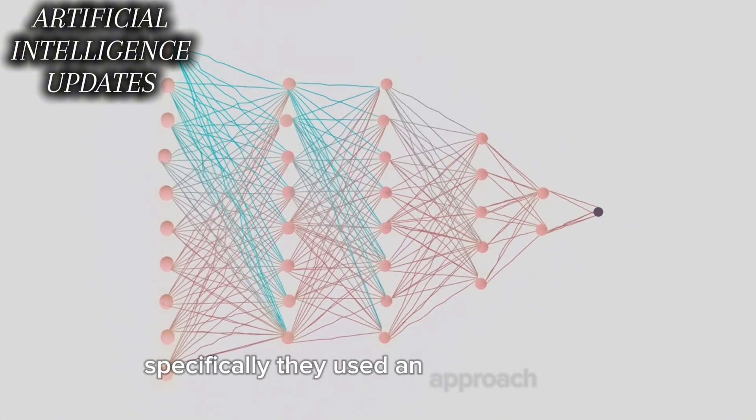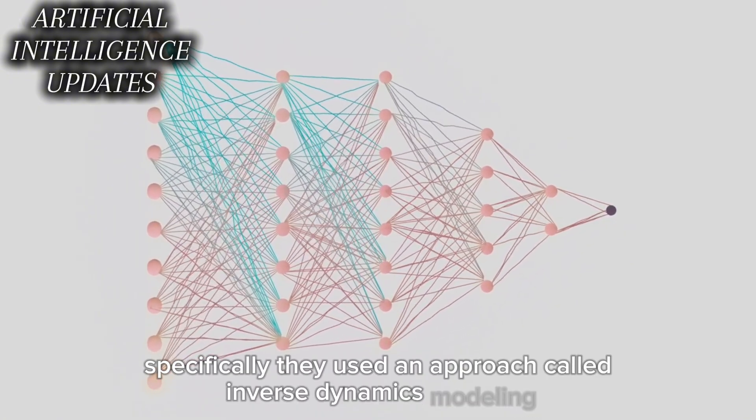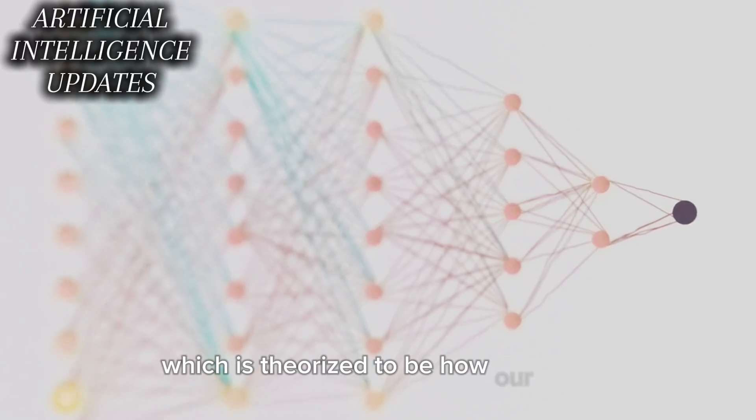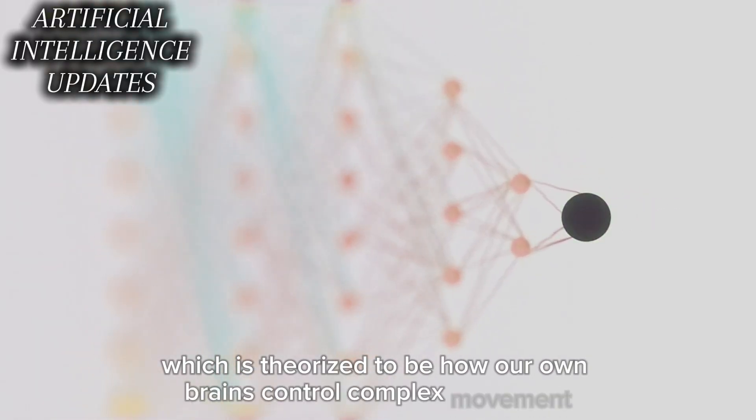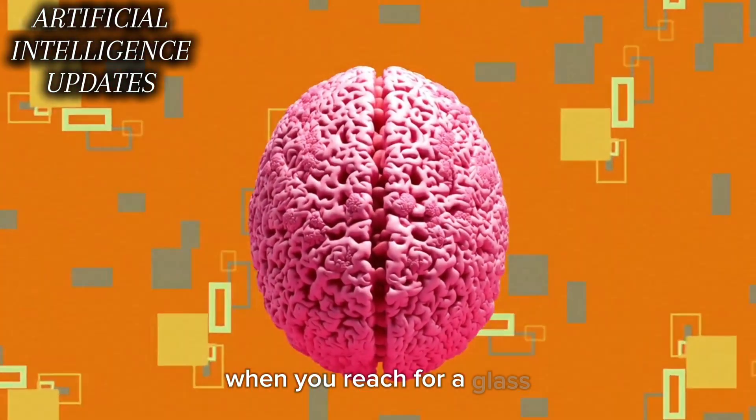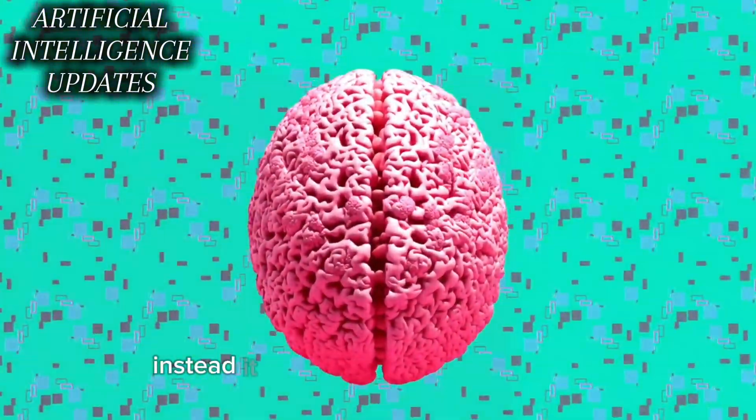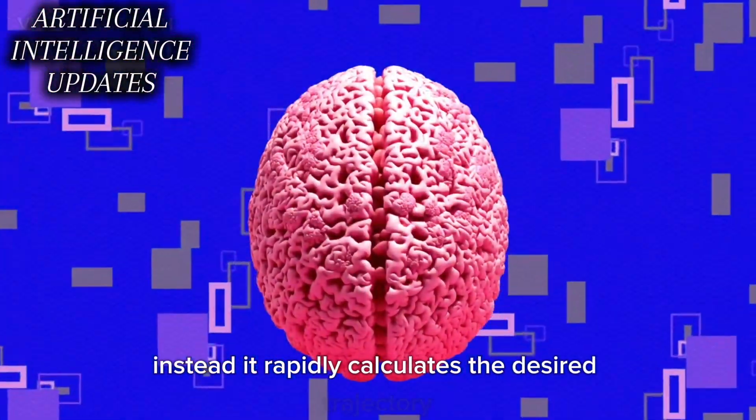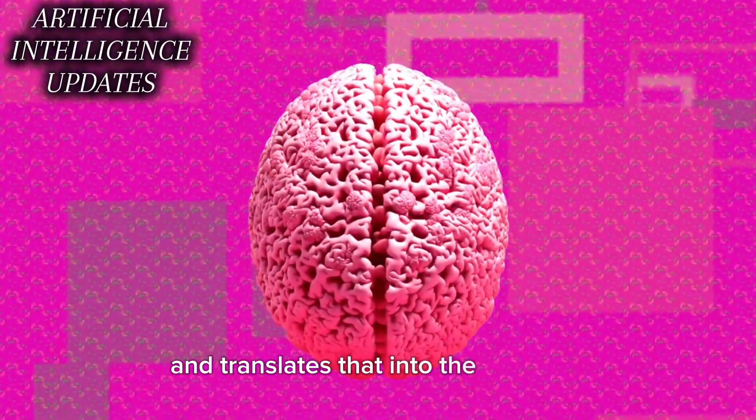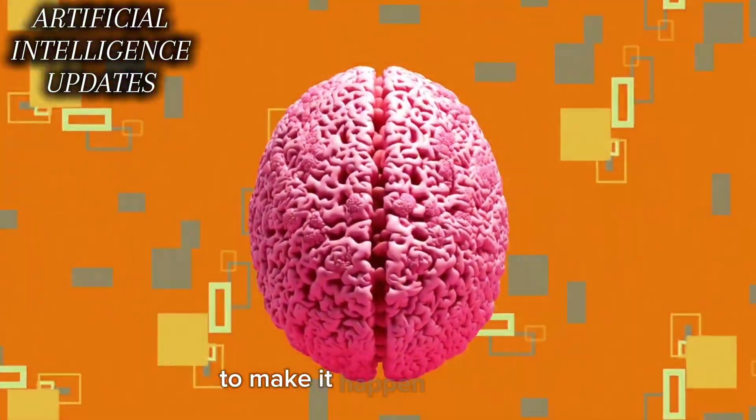Specifically, they used an approach called inverse dynamics modeling, which is theorized to be how our own brains control complex movement. When you reach for a glass, your brain doesn't manually move each muscle. Instead, it rapidly calculates the desired trajectory and translates that into the required forces and torques to make it happen smoothly.